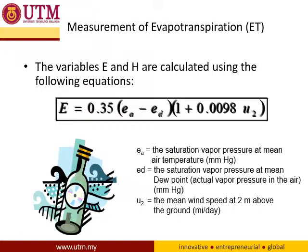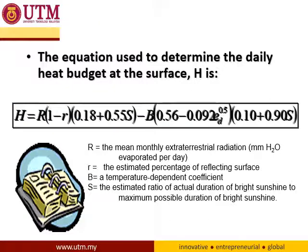From the previous slide formula, for evaporation you can also use this formula — there are many kinds of formulas, and you can use whichever fits your available data. Here is the formula for heat budget, also to calculate evapotranspiration. What you need is radiation data, estimated percentage of reflecting surface, and a temperature-dependent coefficient. There are many parameters that you need to find.